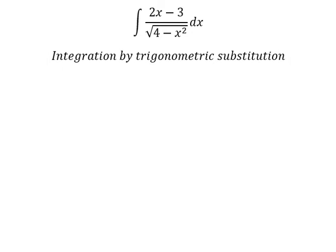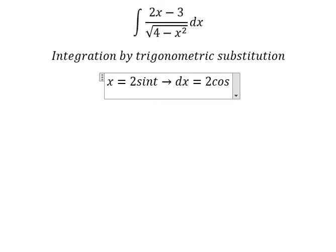Now I will put x equal to 2 sin t. Then dx will be 2 cos t dt. Because if we put this one in here, we have 4 and 4 in here.